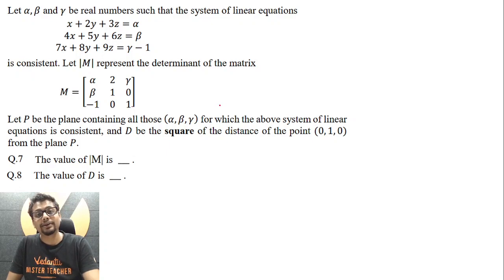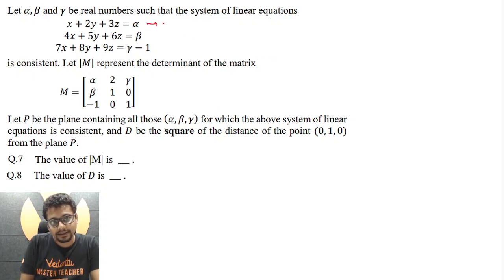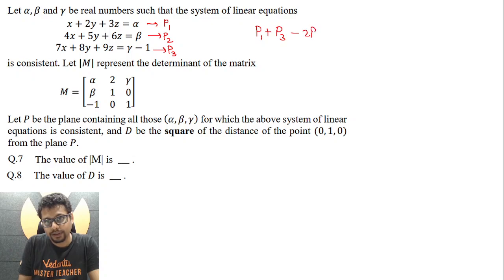That would happen in the case of family of planes. And with a bit of observation, if you say, let's say this effectively represents a plane P1, this represents a plane P2, this represents a plane P3, P1 plus P3 minus 2P2 makes the left-hand side 0. Check it out. So should happen on the right-hand side.